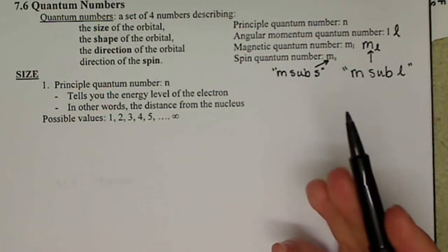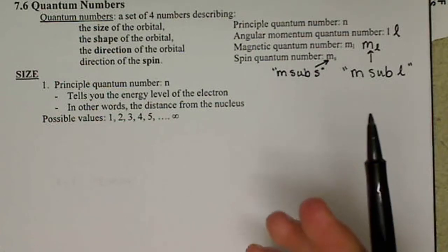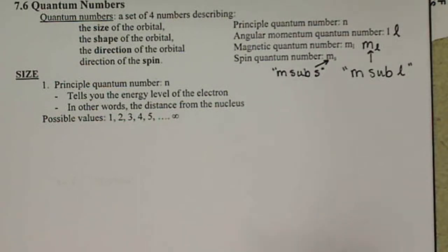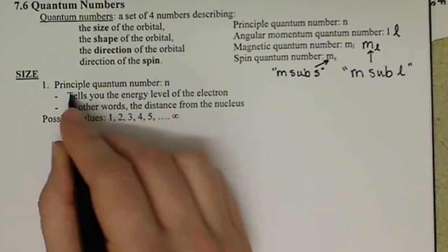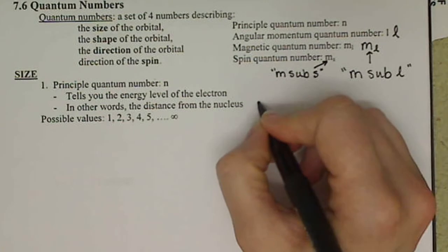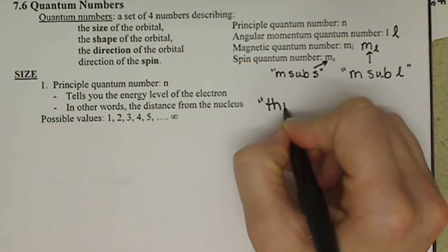Not necessarily realistically, but because we're looking at probabilities, there is a probability that the electron could go to infinity, therefore we do have to include it. It's not likely, but it's a possibility. So for these n values, you want to kind of think of Bohr's atom.